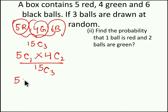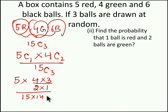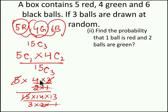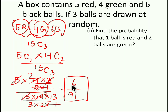The value of 5C1 is 5, and 4C2 is 4×3 / (2×1), and 15C3 is 15×14×13 / (3×2×1). After cancellation we get 2×3 = 6 in the numerator and 7×13 = 91 in the denominator. So 6/91 is the probability of getting 1 red ball and 2 green balls from 5 red, 4 green and 6 black balls while drawing 3 balls at random.